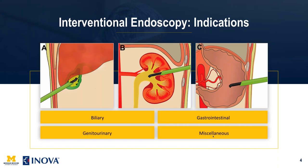Classically, when we think of endoscopy, we think of procedures done by gastroenterologists or urologists. But interventional radiologists have been using endoscopy for quite a while. Biliary endoscopy and cholecystoscopy — looking in the biliary tree or in the gallbladder — has been done for several years. Studies from the University of Pennsylvania, Mallinckrodt, Johns Hopkins, and Michigan show the use of endoscopy in IR. What Ravi and I have pushed for are additional uses outside the standard biliary endoscopy.